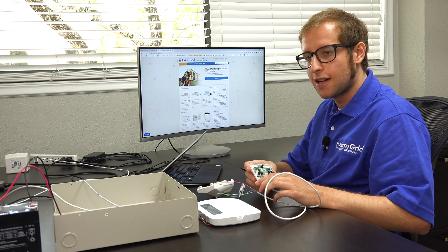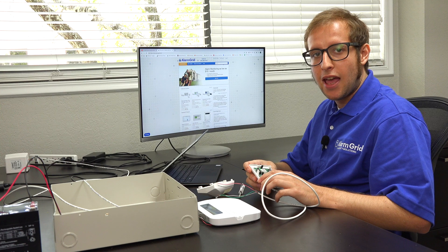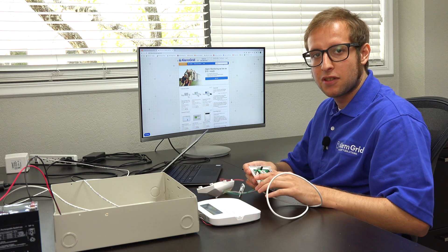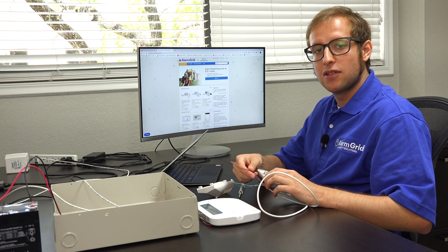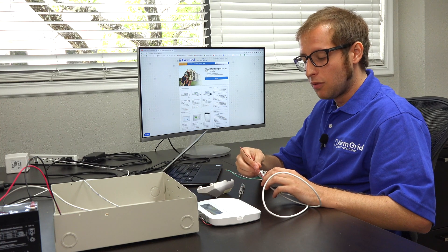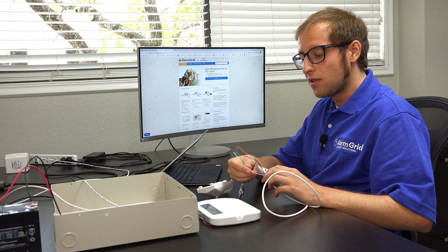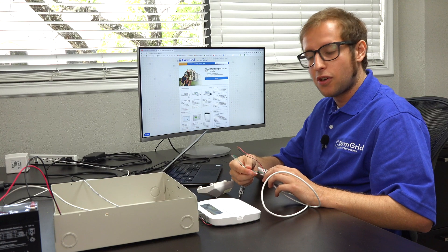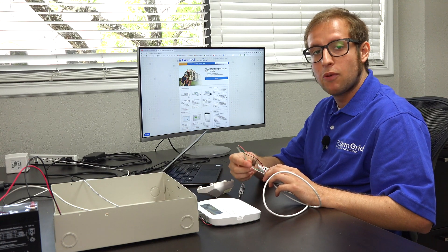Another example would be a glass break detector. They use both power and zone status transmissions. So we're going to have two wires for power, which are the red and black wires. And then we have two wires for zone status, which are, in our case, the green and the white wires.